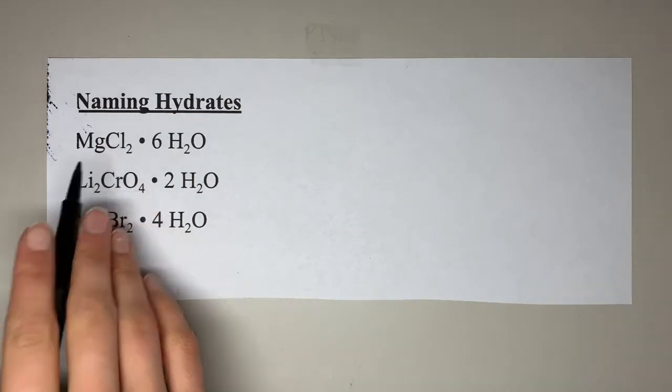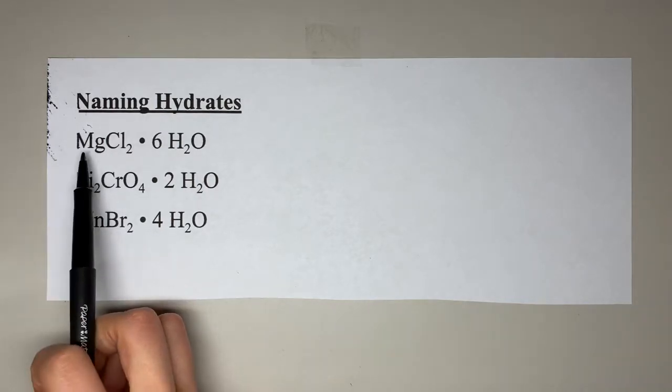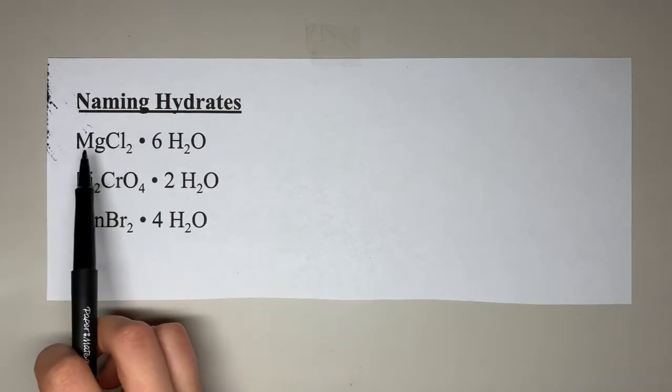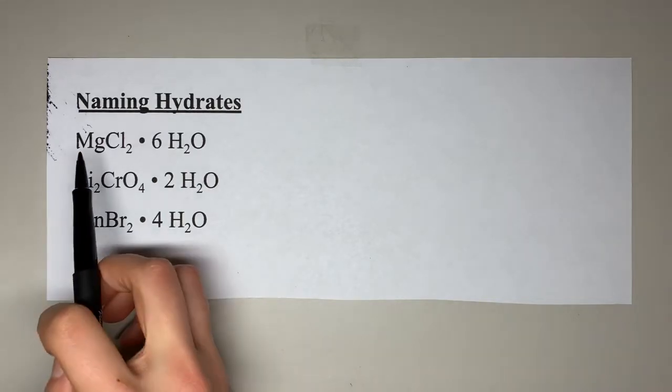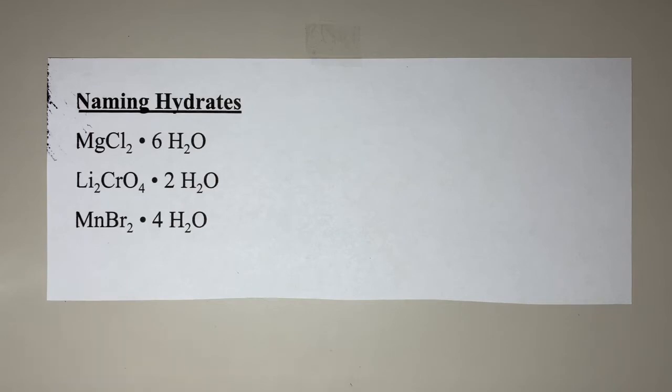Let's practice naming hydrates. The first one is MgCl2 with six waters attached. To start, we name the first compound MgCl2 by walking through our steps. First, decide if it is ionic or covalent. Magnesium is a metal in group two, so this is ionic.